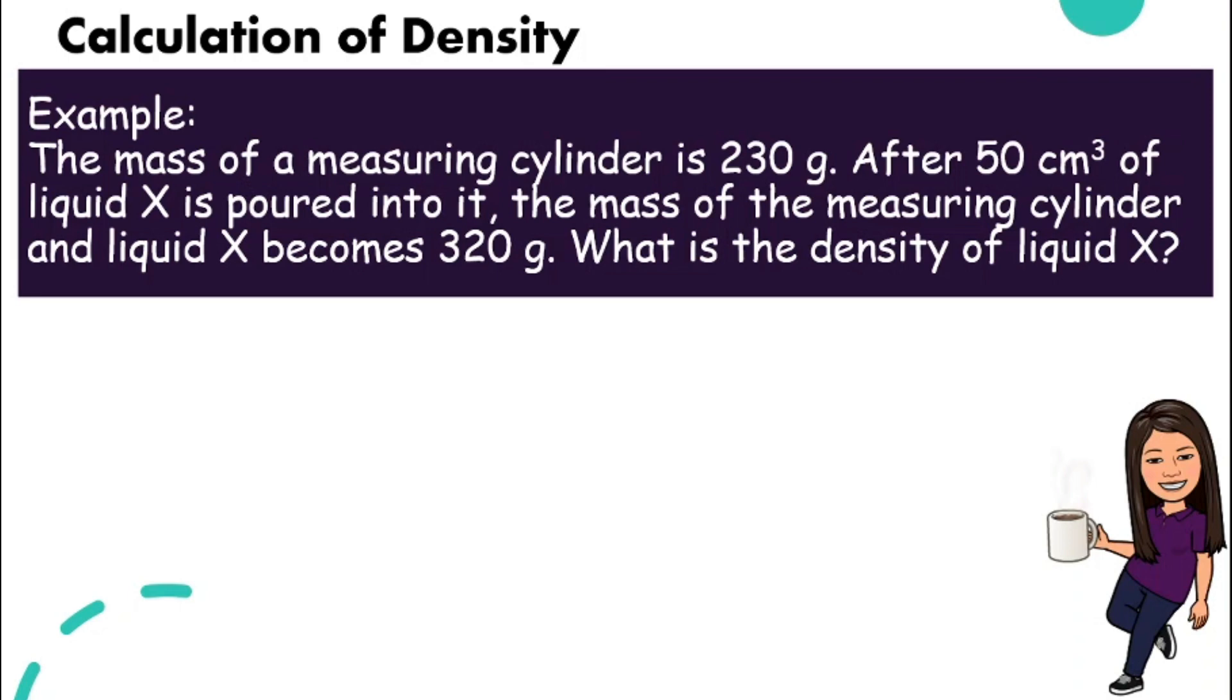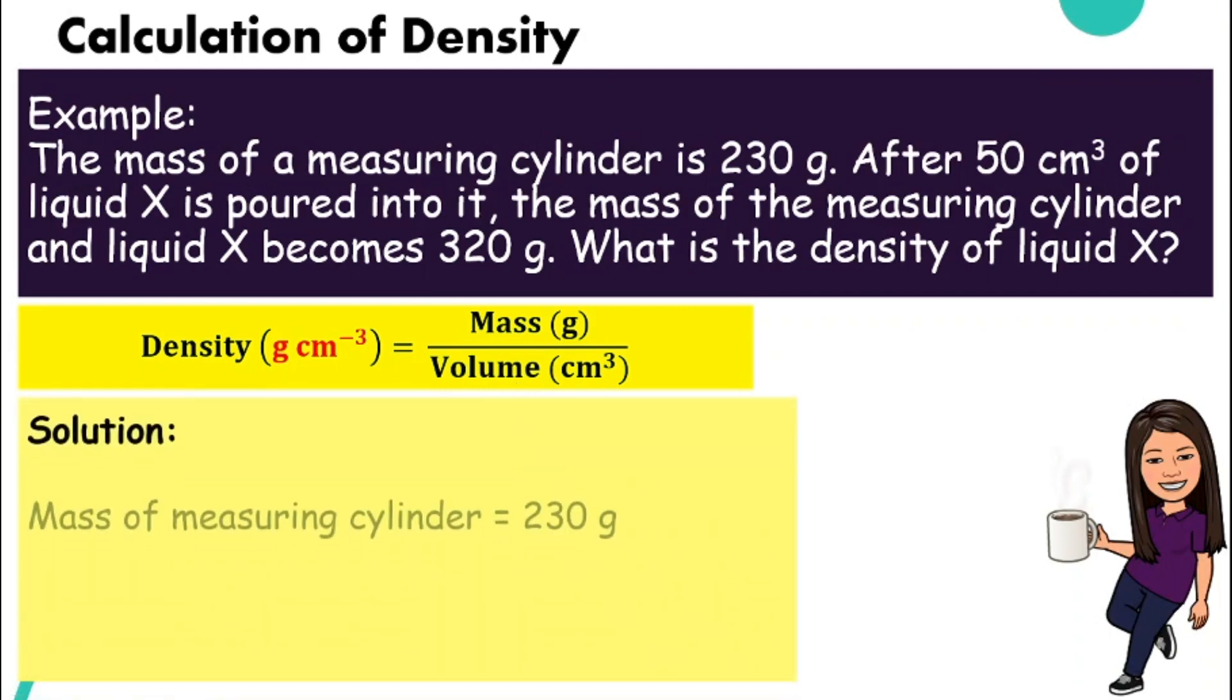The question wants you to calculate density. So first step, write down the formula first. So from this formula, we know we need to find mass and also volume. What does the question tell us? Well, the question already told us that the mass of a measuring cylinder is 230 grams.